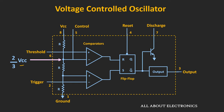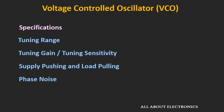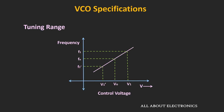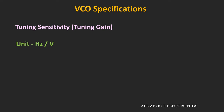That is the working principle of different voltage-controlled relaxation oscillators. Now let's see some of the important specifications of the VCO — these are the specifications we need to consider while selecting a VCO for a specific application. The first specification is the tuning range, which defines the range over which the frequency of the VCO can be tuned. In the datasheet, the manufacturer provides the range of control voltage and the corresponding tuning range. For example, for one VCO, when the control voltage is varied from 0.5V to 20V, the frequency can be changed from 40 MHz to 80 MHz, giving a tuning range of 40 MHz to 80 MHz. The next specification is the tuning sensitivity or tuning gain, which defines by what amount the frequency can be changed when we change the control voltage by 1V, and it is defined in terms of Hz per volt.